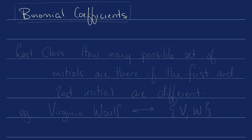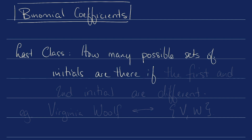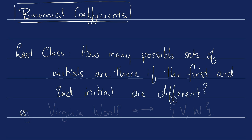Hi class. Let's talk about binomial coefficients. Last class we were discussing a question: how many possible sets of initials are there if the first and second initial have to be different? The first thing we realized is that we were talking about the creation of sets. So if you have a name like Virginia Woolf, we're talking about creating a two element set made from letters where the first and second elements have to be different from each other.